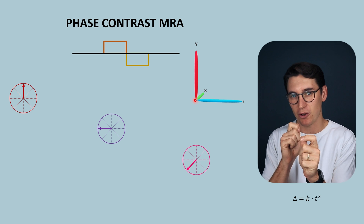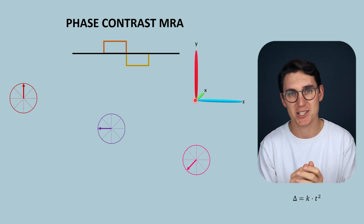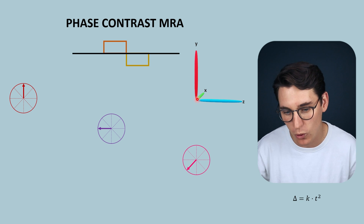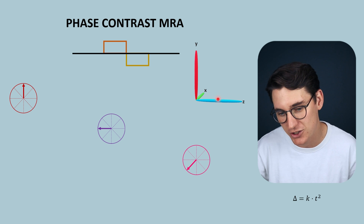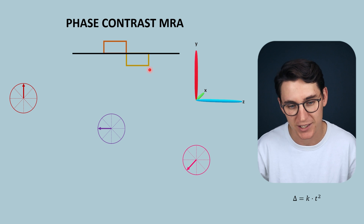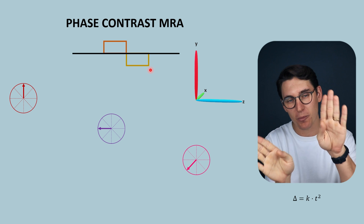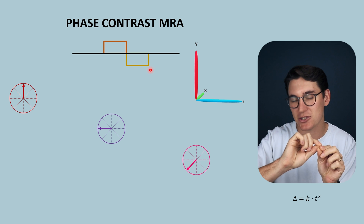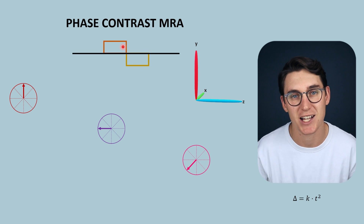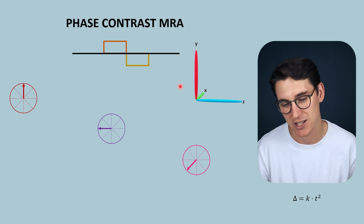Blood doesn't only flow through the slice in the z-axis; it can flow diagonally through our slice. Ideally, we want to use more than three separate sequences — more than just x, y, and z planes. We can apply the phase contrast gradient simultaneously in both the x-axis and the y-axis to get a combination vector that assesses flow diagonally through our slice. So ideally, we want to do this more than three times — six times, twelve times — to assess phase change in multiple different planes.